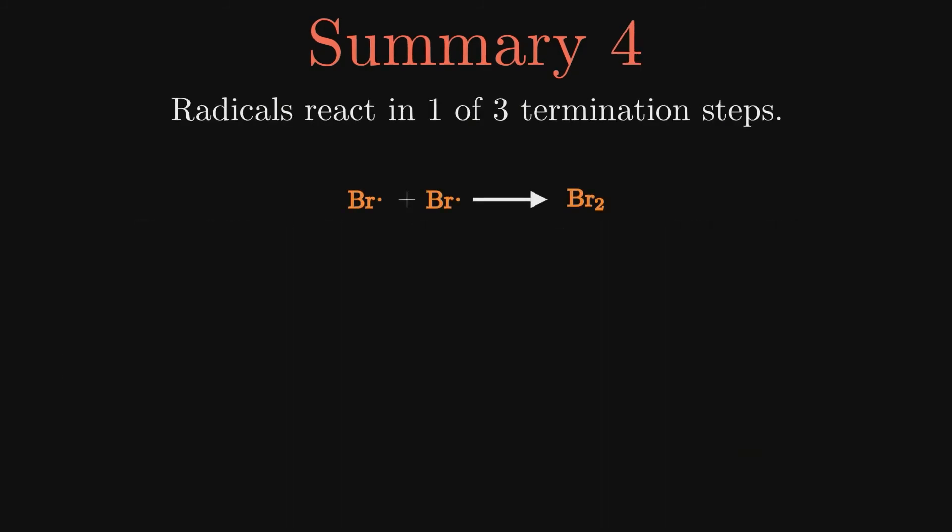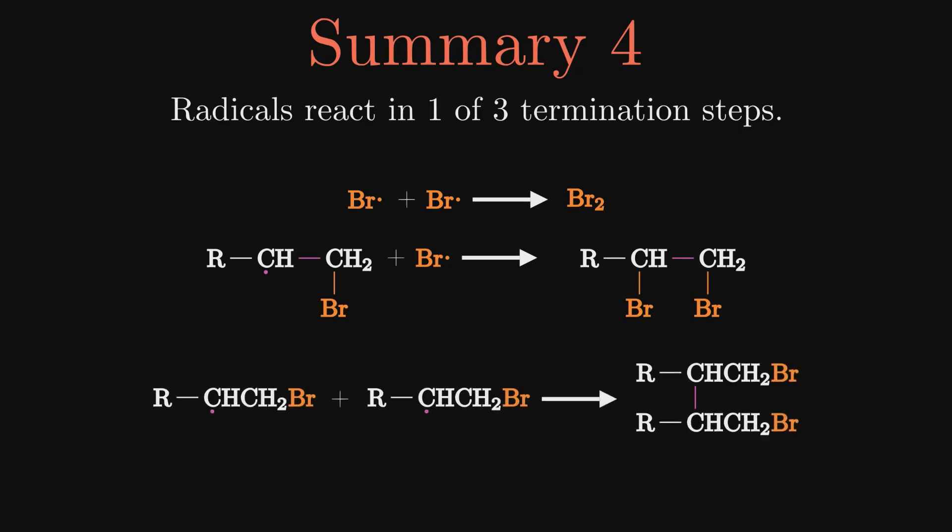Termination steps involve the reaction of two radicals, with the simplest being bromine radicals combining to form bromine molecules. Another is when the alkyl bromide and bromine radicals react to form the dihalide product. Finally, if two alkyl bromide radicals react, we get an even larger dihalide product.